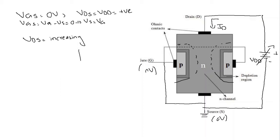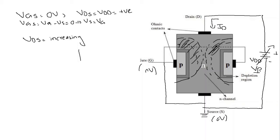If we increase Vds to a level where the two depletion regions appear to almost touch each other, then the voltage Vds at this point is called the pinch-off voltage Vp. The key word is that they appear to touch each other — in reality they do not actually touch each other.